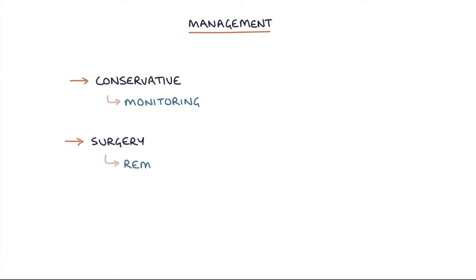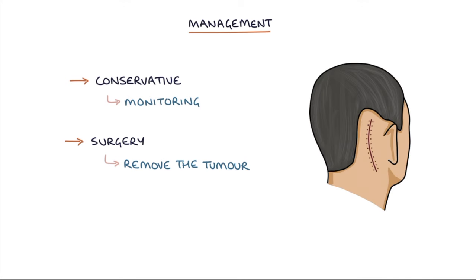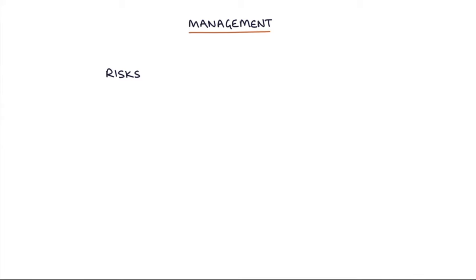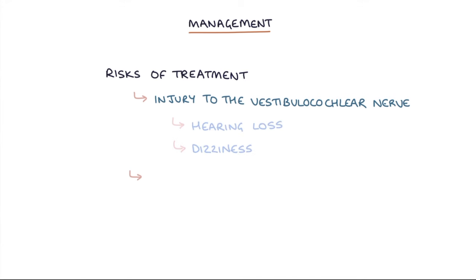Surgery to remove the tumour, which could be a partial or a total removal of the tumour, and radiotherapy can be used to reduce the growth of the tumour. Notable risks associated with treatment are injury to the vestibular cochlear nerve resulting in permanent hearing loss or dizziness, and facial nerve injury with facial weakness.